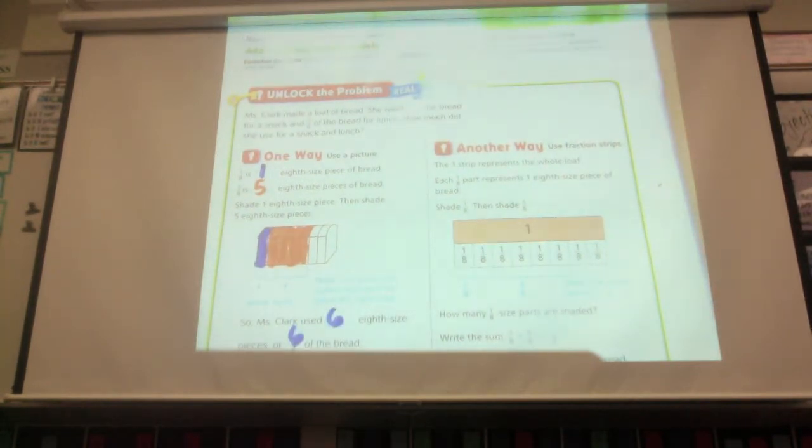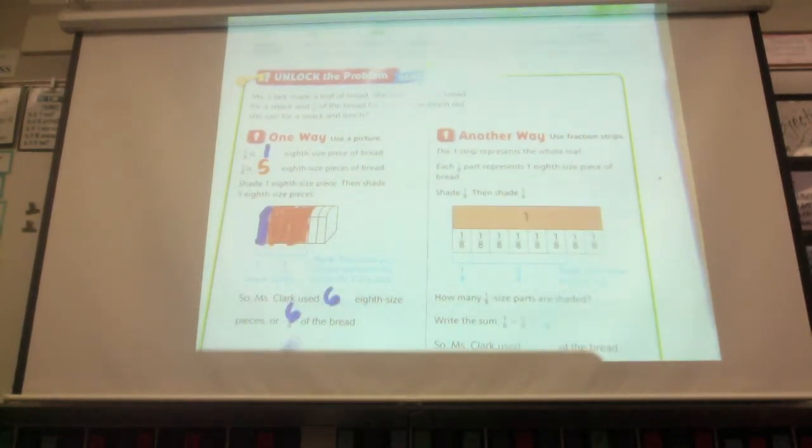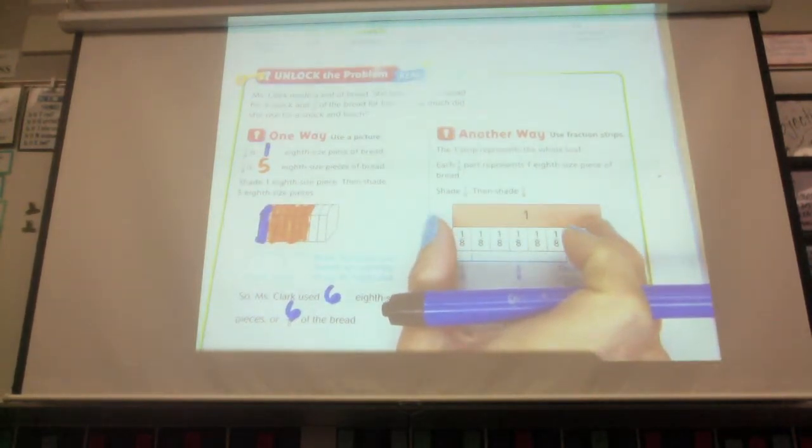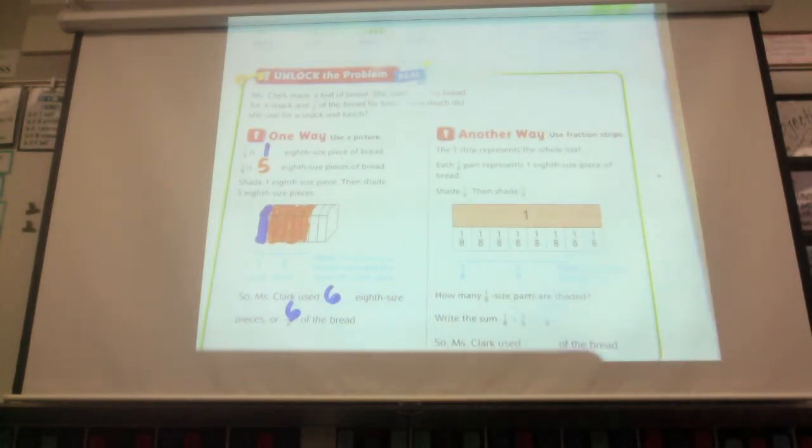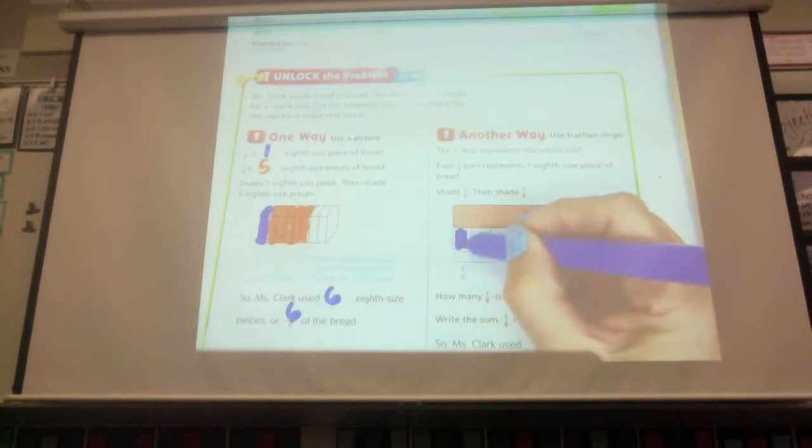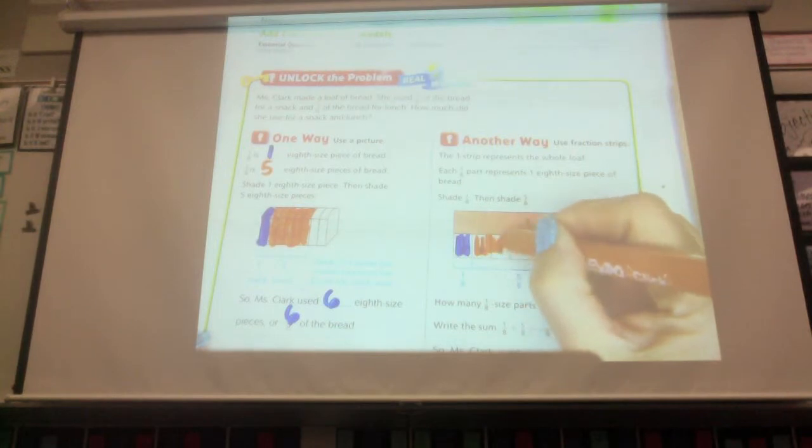You can also use a bar model like we were doing the other day. You don't actually have to draw out a bread. This is a lot more difficult to draw than this. So we have a one whole. Here's the whole loaf of bread. And then we have it represented as being split into eight. And then you can shade one-eighth for the snack and five-eighths for, what was that for? For lunch?